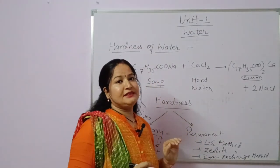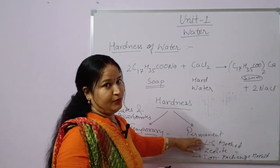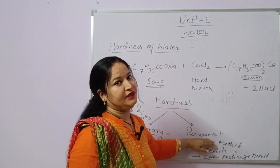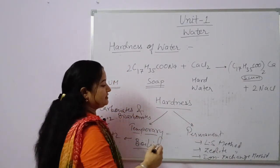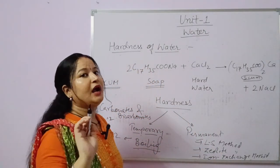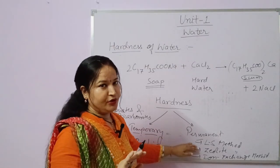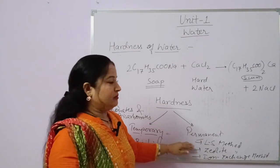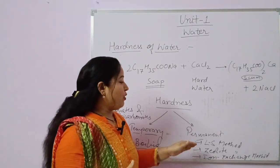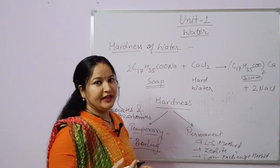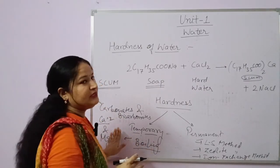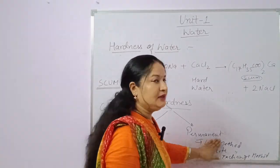In the case of permanent hardness, except carbonates and bicarbonates, the rest of the impurities come under permanent hardness. This type of hardness is also known as non-carbonate hardness, because there are no carbonates — except calcium and magnesium carbonate and bicarbonate. All other impurities like calcium chloride, calcium fluoride, calcium nitrate, and magnesium chloride are classified under permanent hardness.